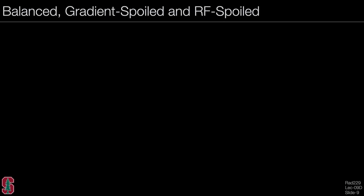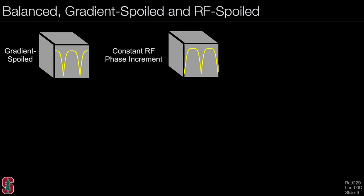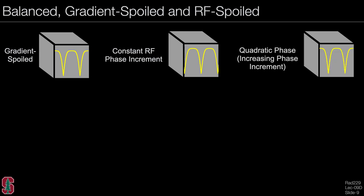Putting this together with balanced SSFP, gradient spoiling, and RF spoiling: in a gradient echo sequence, we take the balanced SSFP signal and compress it into a voxel. A constant RF phase increment shifts this profile, just like shifting the center frequency of the scan. A quadratic phase increment is actually increasing this phase increment linearly over time, so the profile is shifting through the voxel.